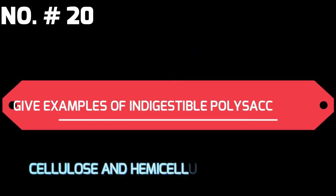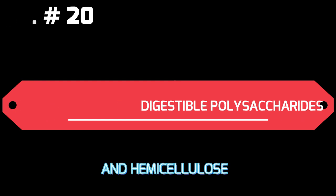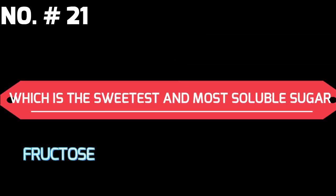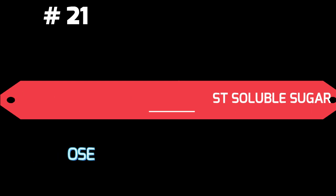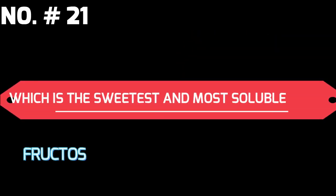Give examples of indigestible polysaccharides. Answer: cellulose and hemicellulose. Which is the sweetest and most soluble sugar? Answer: fructose.